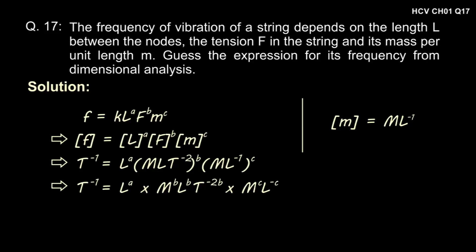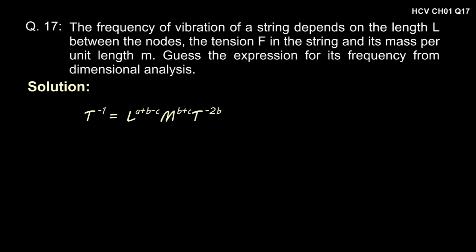Simplifying we get T to the power minus 1 is equal to L to the power A plus B minus C into M to the power B plus C into T to the power minus 2B. Comparing the powers we get minus 2B is equal to minus 1 which gives B is equal to 1 by 2.